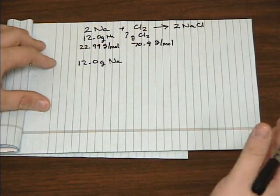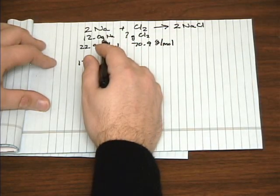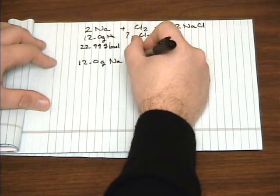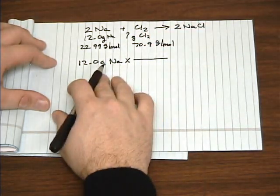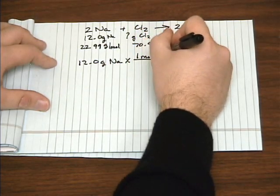If we treat it like a unit conversion, we want to convert grams of sodium to grams of chlorine. Just like before, the first thing we need to do is convert grams to moles. So we'll use sodium's molar mass.